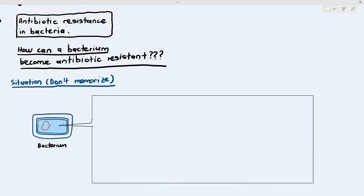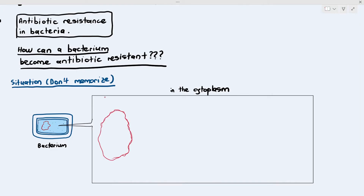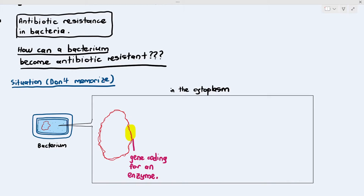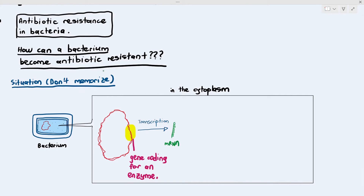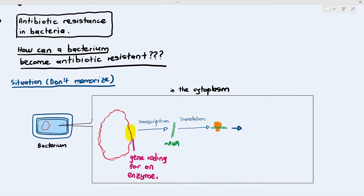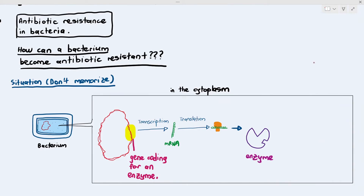I'm showing you a bacterium, and in the cytoplasm there is a circular DNA. I've highlighted a particular gene which codes for an enzyme. The gene undergoes transcription to produce mRNA, and the mRNA goes to the ribosome where translation happens, and thus the ribosome synthesizes a particular protein — in this case, the enzyme.